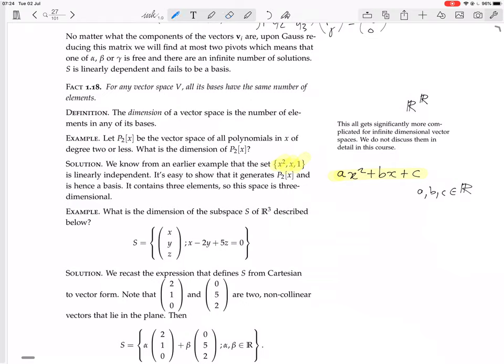So polynomials of degree 2 or less is a three-dimensional vector space. Of course, it's a subspace of the vector space of functions from reals to reals, which is infinite dimensional. Next, what is the dimension of the subspace S of R³ described below? Here's a subspace: all those x, y, z such that x minus 2y plus 5z equals 0.